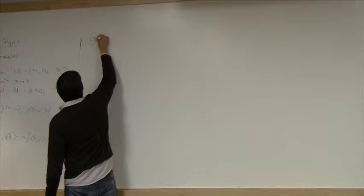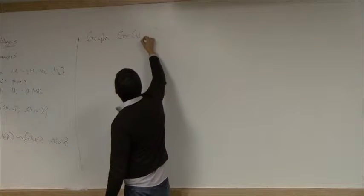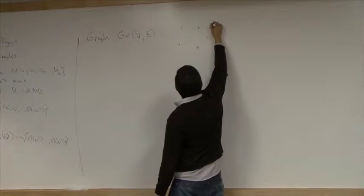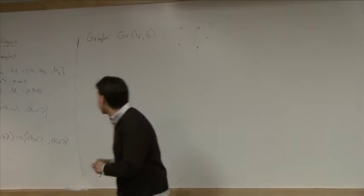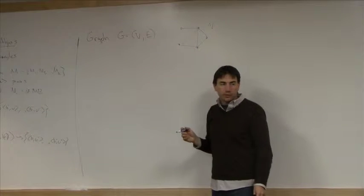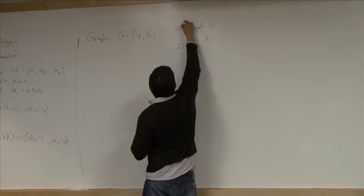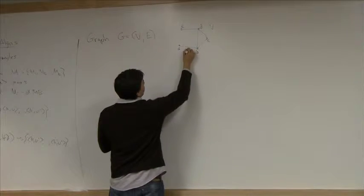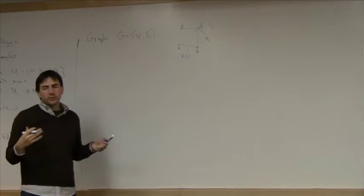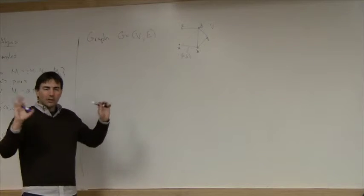We're going to look at graphs. We'll have a graph G with a set of vertices V and a set of edges E. As a reminder, you can have a graph where the five nodes are the vertices, and the edges are defined by pairs of those vertices. If the vertices are A, B, C, D, and E, then you would label a specific edge as A-B. For this purpose, we'll look at undirected graphs.